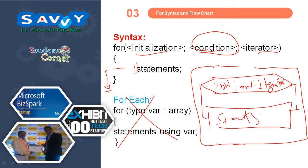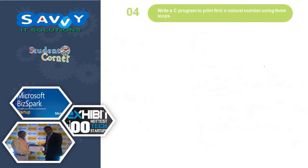We can write it not only in this way; we can also write in the previous models and it will be accepted. Now we are moving to the program: write a C program to print the first N natural numbers using three loops.